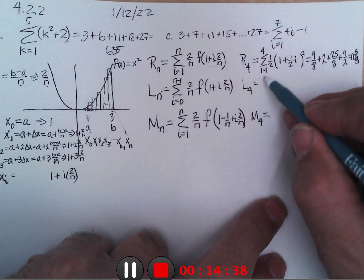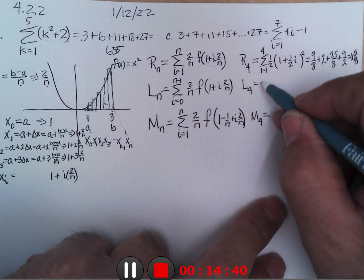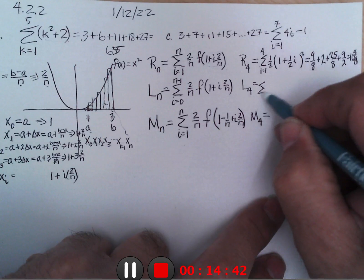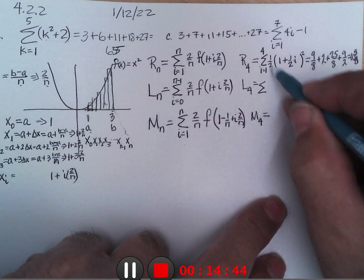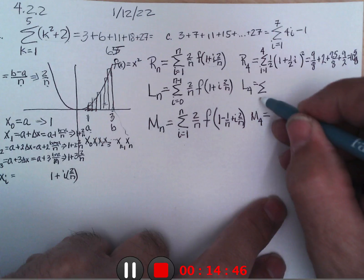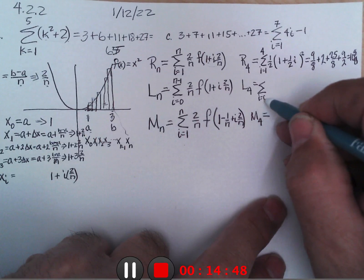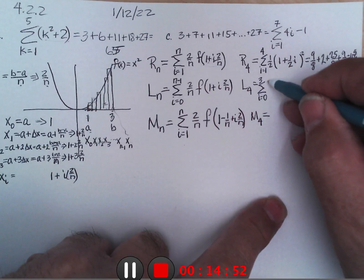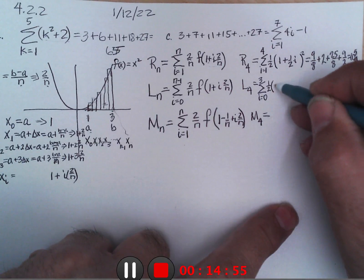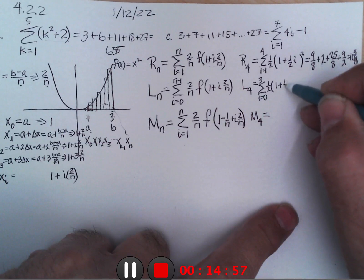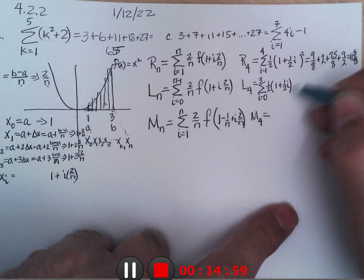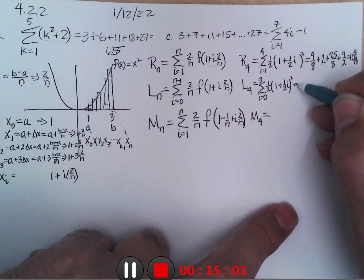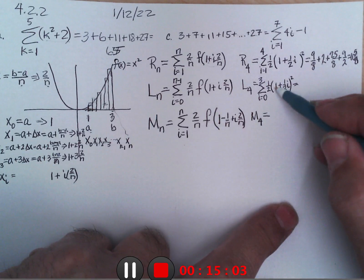If we do the left, we do the same, same stuff, except we're going to go from 0 to 3. Width of the interval would be still 1 half. We'd be doing 1 plus 1 half times i squared. We'd put in 0 and we'd get 1 squared times a half is a half.